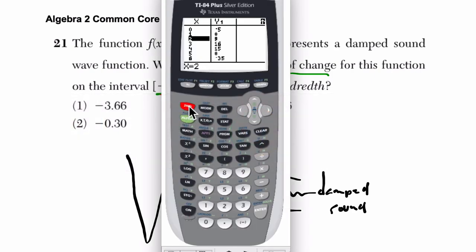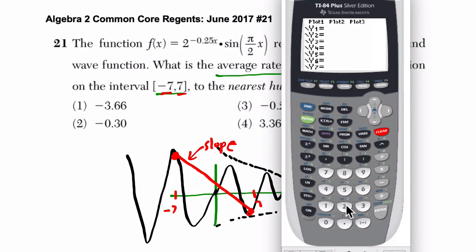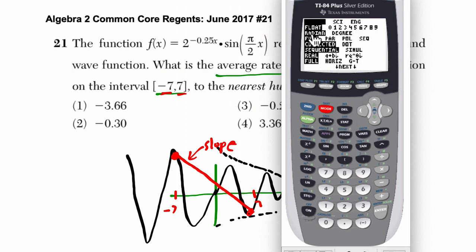For many of these problems, what I find the easiest is to hit y equals, clear off any old function, enter the function they're giving me. So I'm going to put 2 to the power of negative 0.25x. And then sine, it's pi over 2, so this is in radians. So second pi divided by 2x, close parentheses. And before I hit anything over here, I'm going to hit mode and make sure I'm in radians. Okay, I am. Now if I hit the graph button, I'm going to start to get a picture of my sine function. But I don't really need that. So I'm going to hit on, pause that. All right. Or end that, I should say.